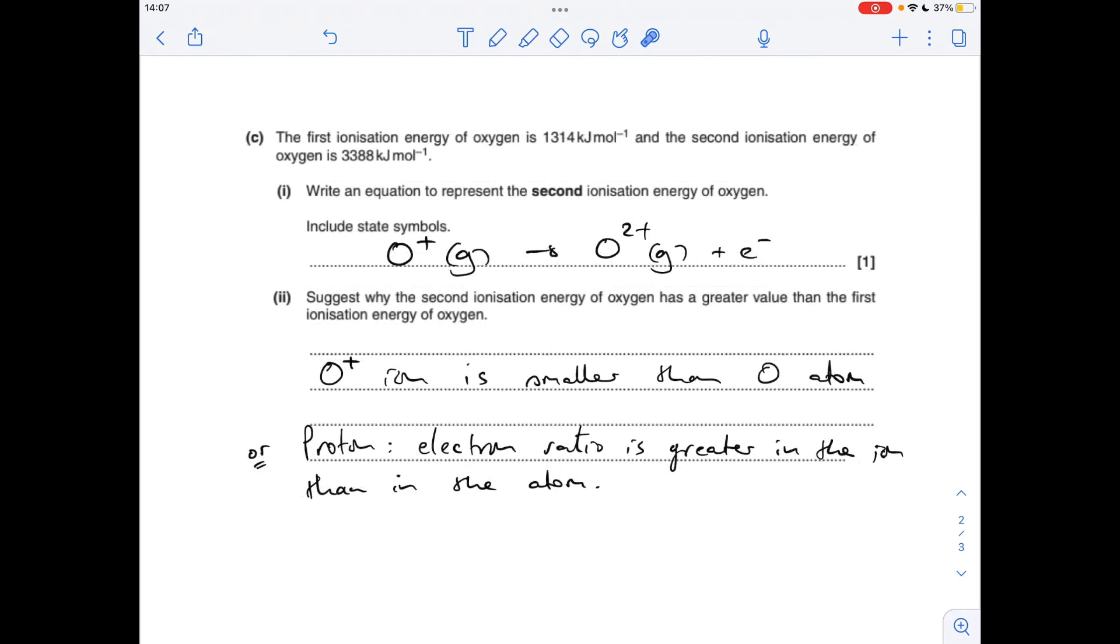Finally, suggest why the second ionisation energy of oxygen has a greater value than the first. There are a couple of answers you could give. First, the O+ ion is smaller than the O atom, so there will be a greater attraction on the electrons.